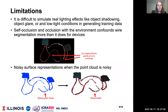One challenge with using UIUC wires to train instance segmentation is it does not simulate real lighting effects like object shadowing, object layering, or low light conditions. We also observe resolving self-occlusion and environmental occlusion as an open problem in wire instance segmentation.